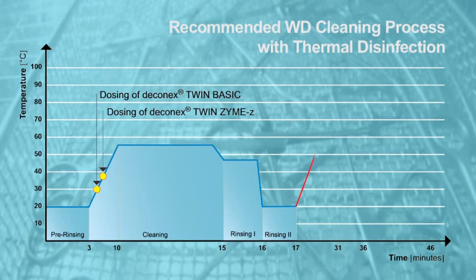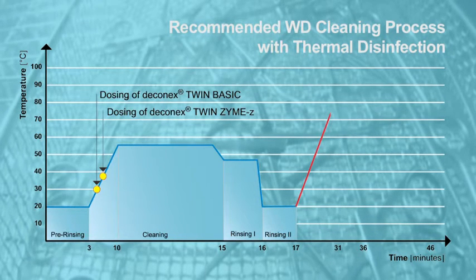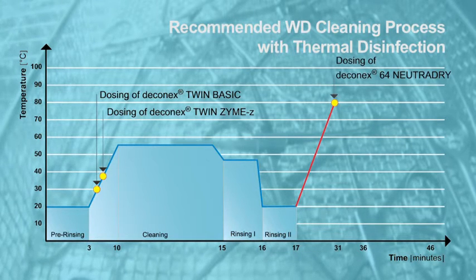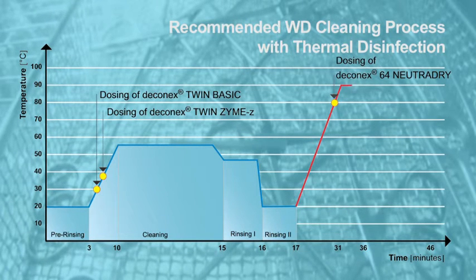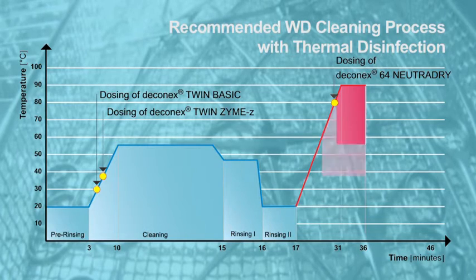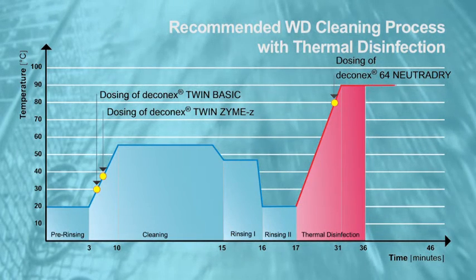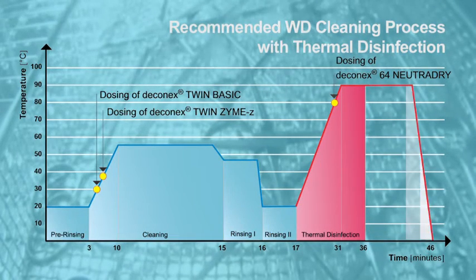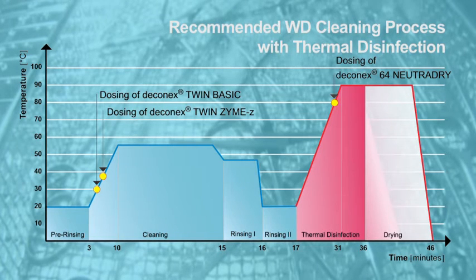The thermal disinfection step, including the dosing of a rinsing and drying aid, Deconnex 64 NutriDry, at approximately 80 degrees Celsius, is performed at 90 degrees Celsius for five minutes. The WD cleaning process is finalized with a drying step lasting approximately 10 minutes.